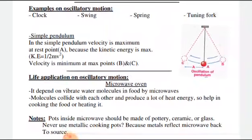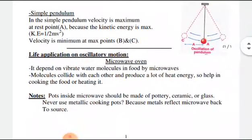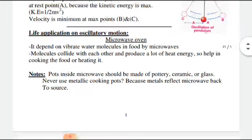Simple pendulum velocity is maximum at position A, lower rest point A, our rest position for the pendulum. Because the kinetic energy is a maximum. And at B, the velocity is minimum at B point and C point.